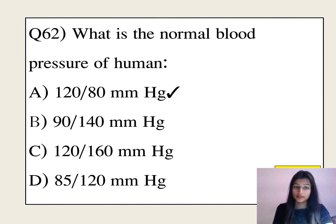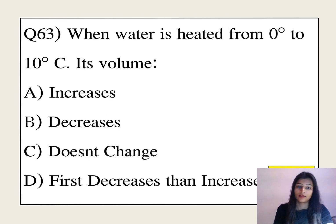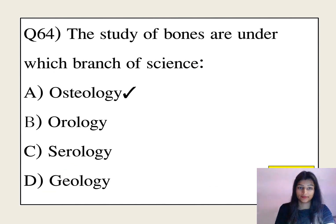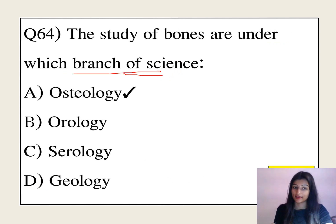What is the normal blood pressure of a human? It is 120 by 80 mmHg. When water is heated from 0°C to 10°C, its volume first decreases and then increases. The study of bones comes under which branch of science? The answer is osteology.